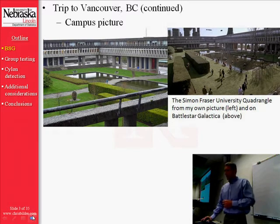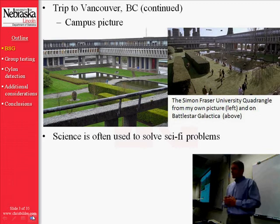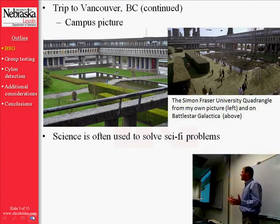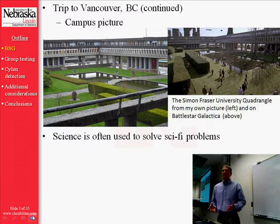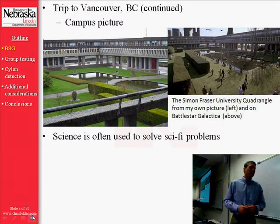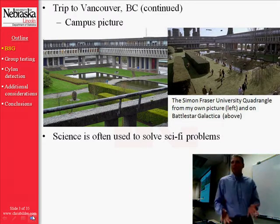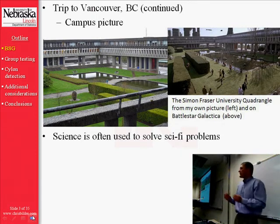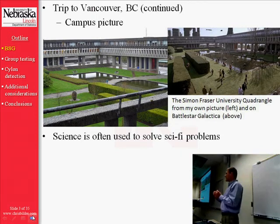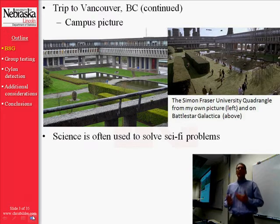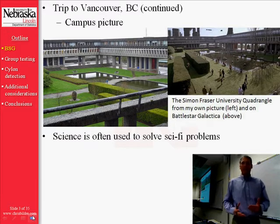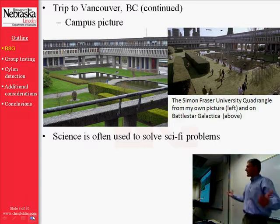This whole trip got me thinking more about how science is often used to solve sci-fi problems. What I mean by that is on sci-fi TV shows, movies, and in books, so often you see science as the tool being used to rescue characters from the brink of disaster. Well, why couldn't the type of science being used be statistical science?